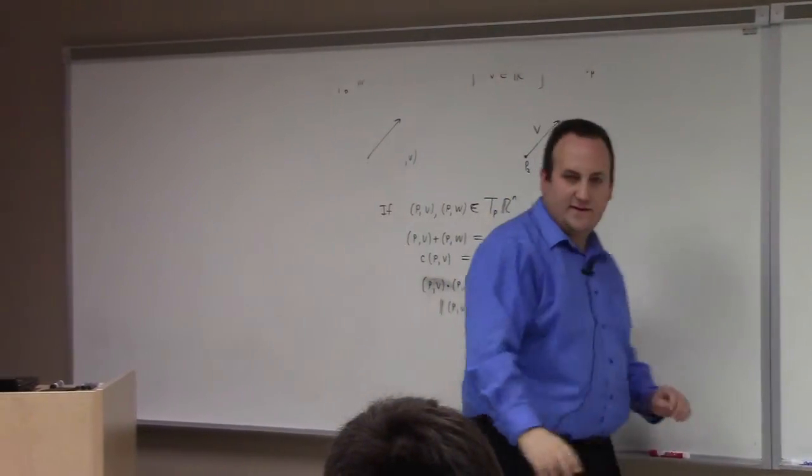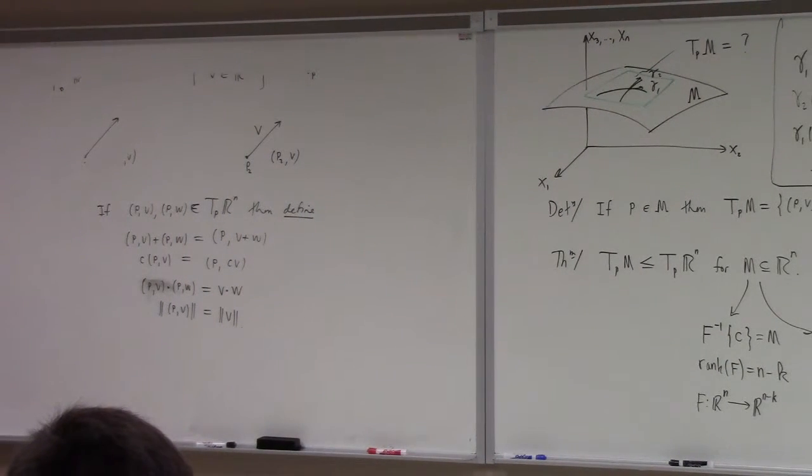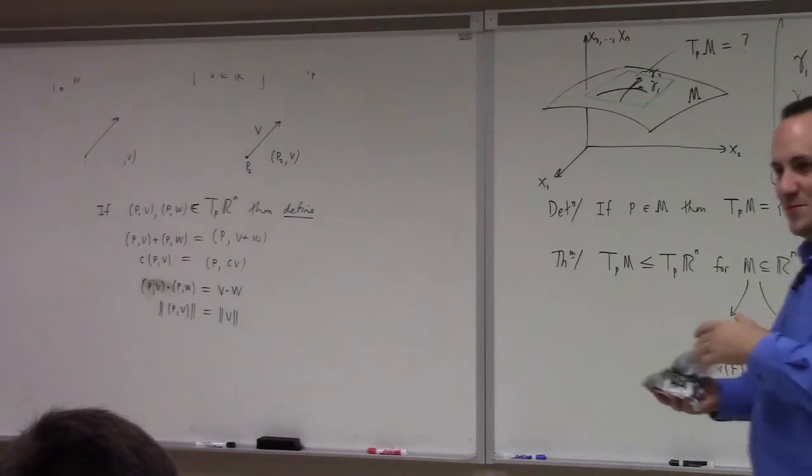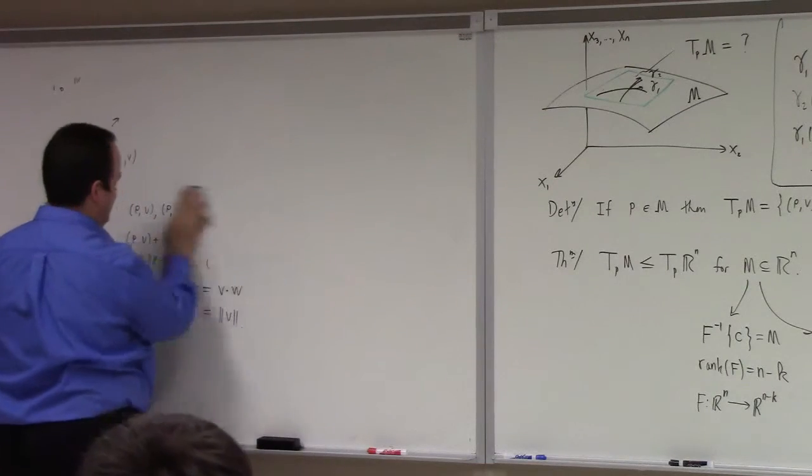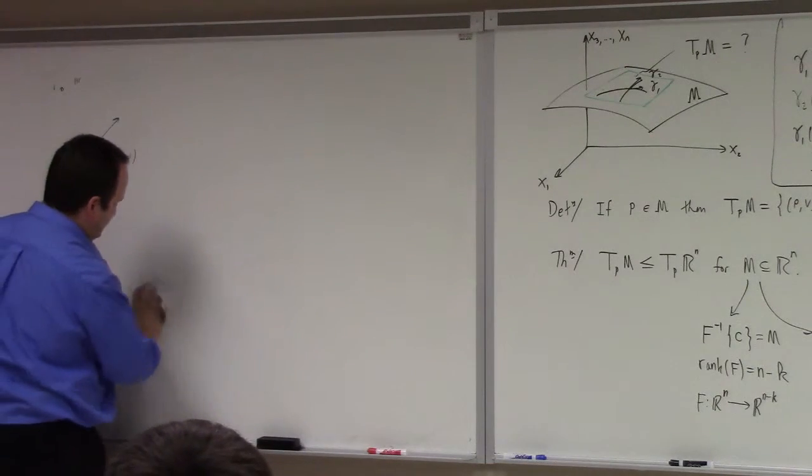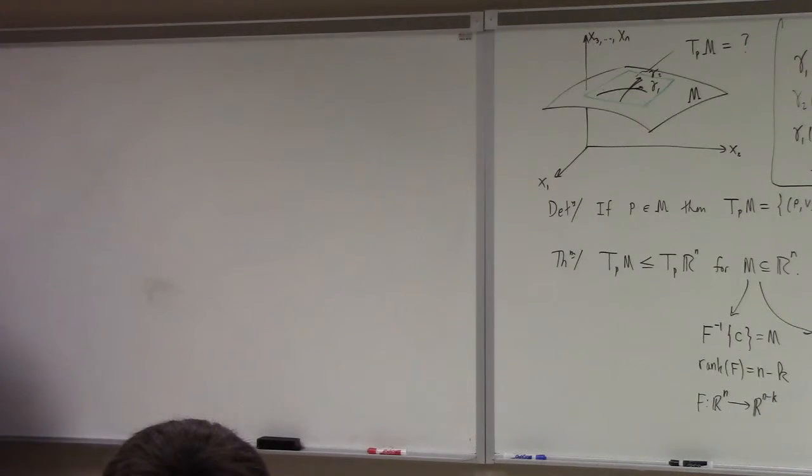Now, what was the example we looked at last class? By the way, you notice that there's not a normal line here. There's actually a normal volume. What did I write down at the end of last class? What was it?